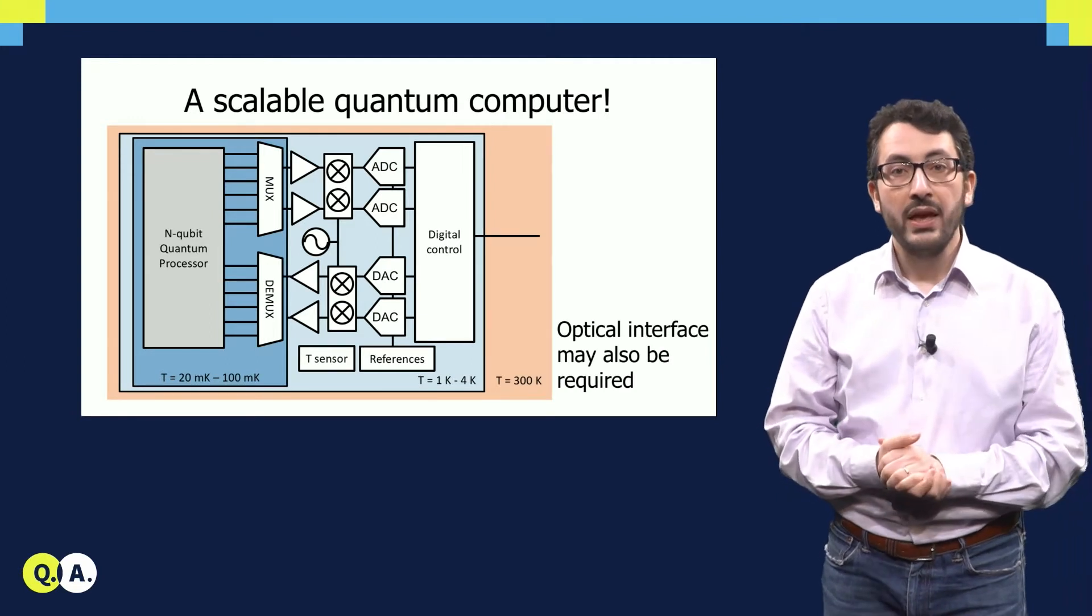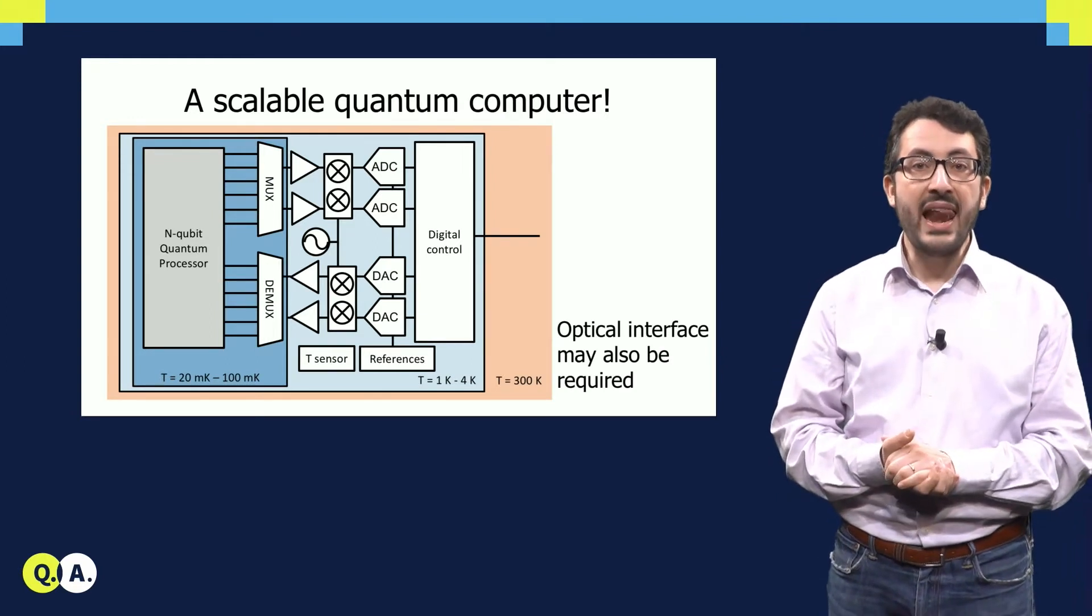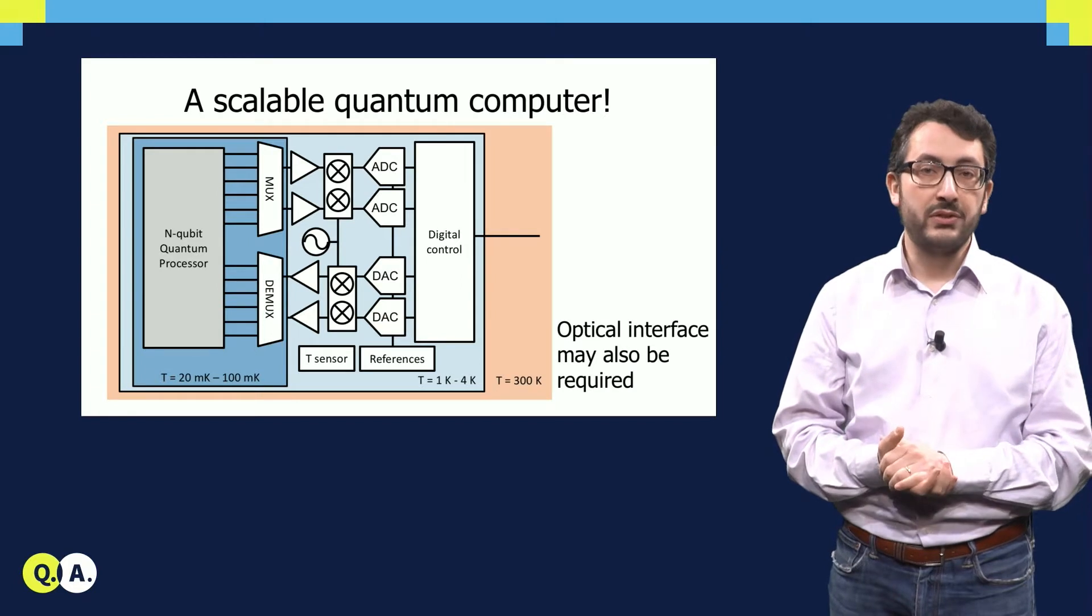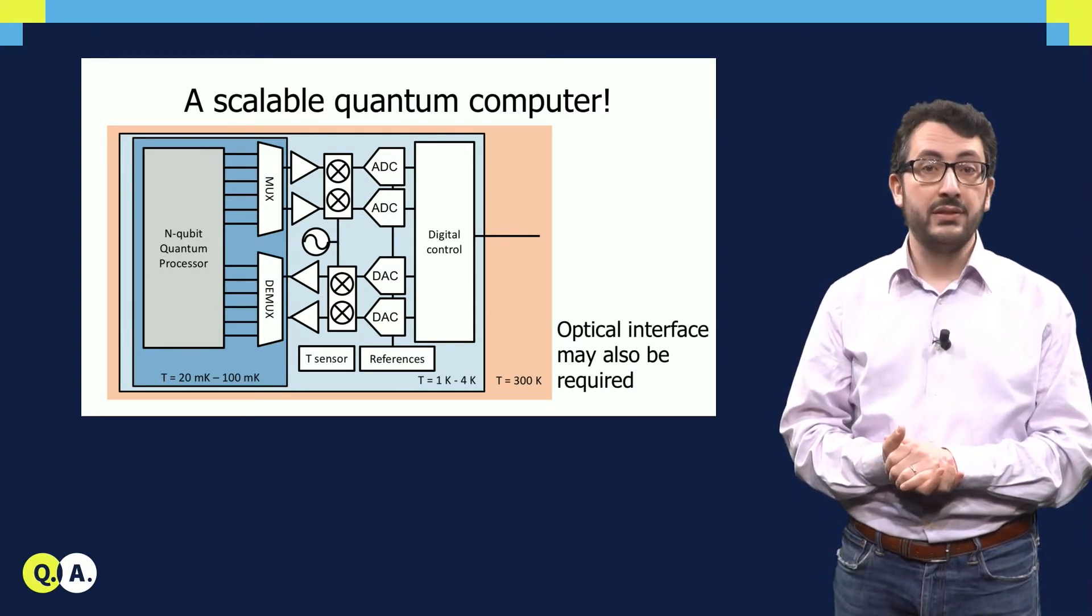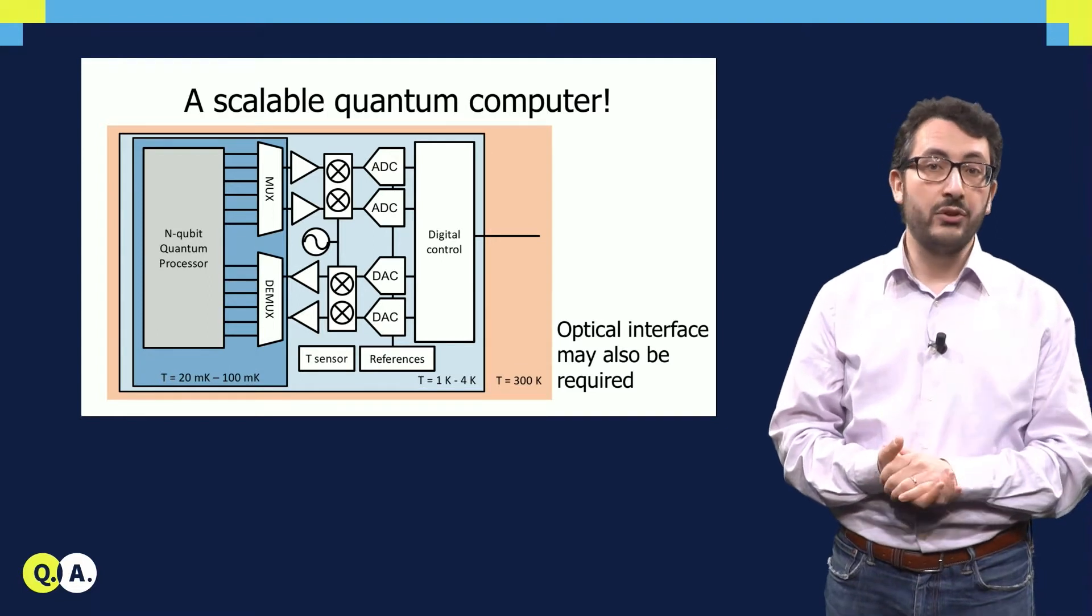As a side note, here I am showing a purely electrical interface, but for some qubits, for example NV Centers, we may also need an optical interface, possibly also working at cryogenic temperature.